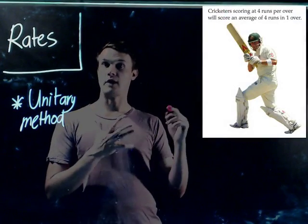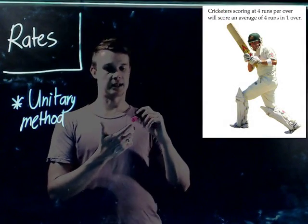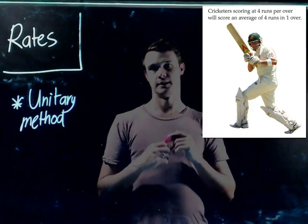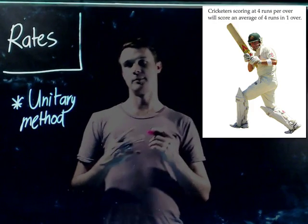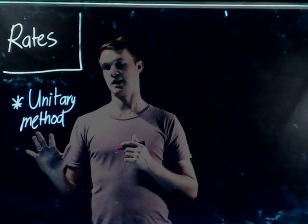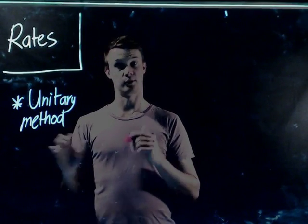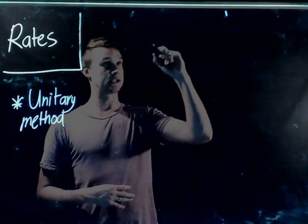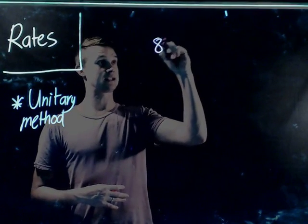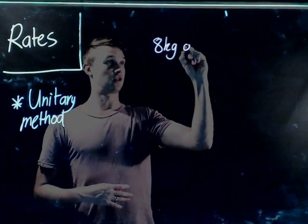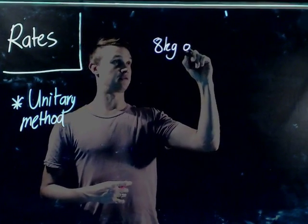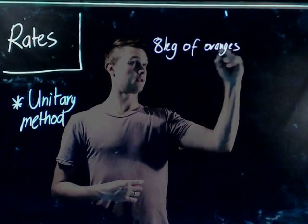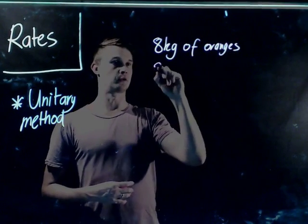You also hear about rates in cricket — the run rate meaning how many runs they make per over. So it's comparing different things. Now the way we're going to look at this is using the unitary method, so let's do an example. Let's say we have eight kilos of oranges that cost twenty-four dollars.